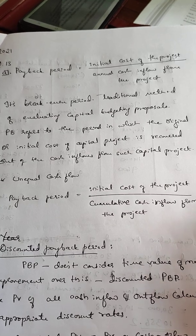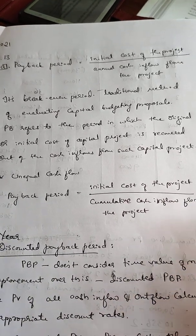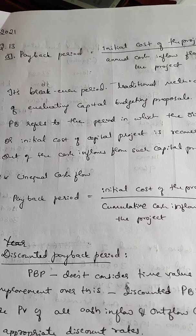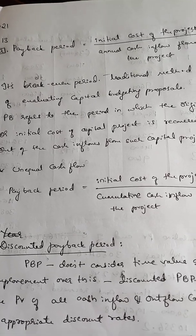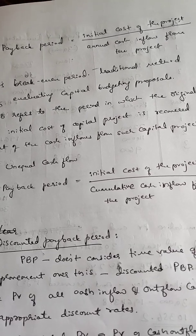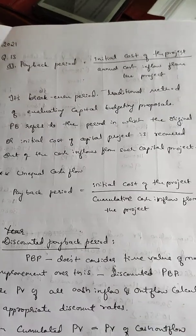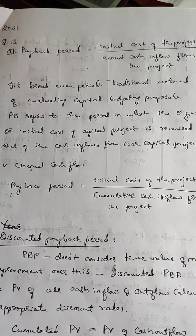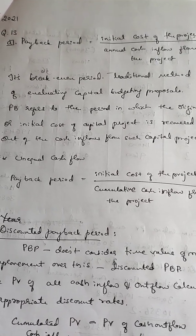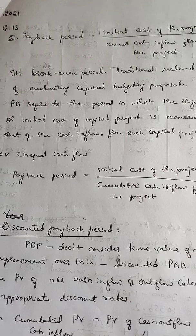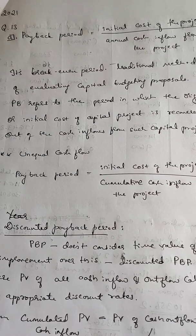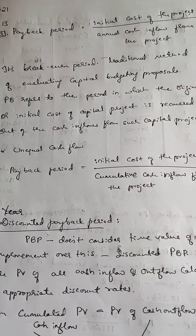For payback period, the formula is: initial cost of the project divided by annual cash inflow from the project. It is a break-even period and a traditional method of evaluating capital budgeting proposals. Payback period refers to the period in which the original or initial cost of a capital project is recovered out of the cash inflows from that capital project.